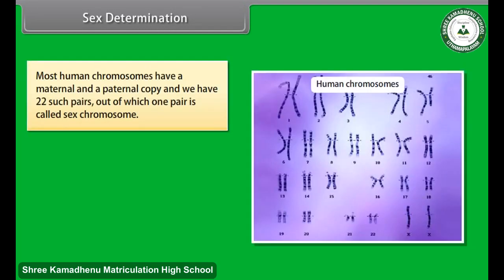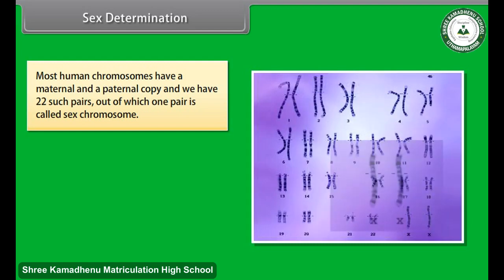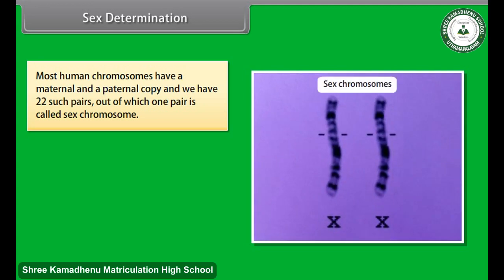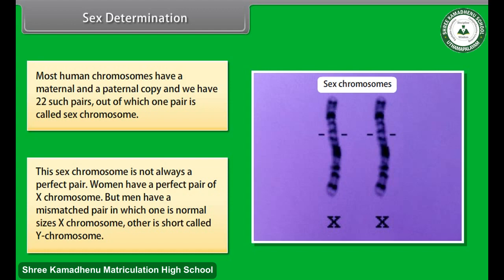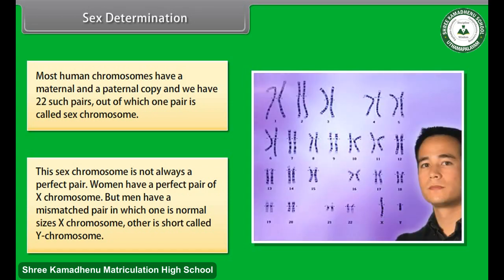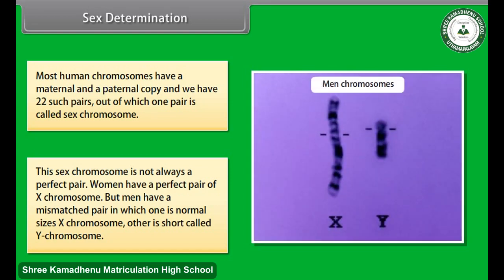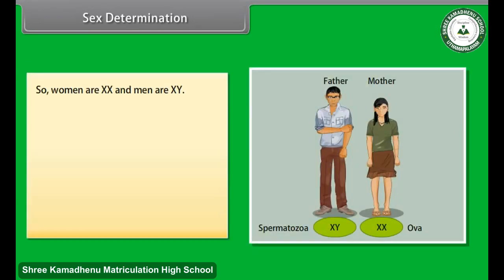Sex Determination: Most human chromosomes have a maternal and a paternal copy, and we have 22 such pairs, out of which one pair is called the sex chromosome. This sex chromosome is not always a perfect pair. Women have a perfect pair of X chromosomes, but men have a mismatched pair in which one is normal-sized X chromosome and the other is a short Y chromosome. So women are XX and men are XY.